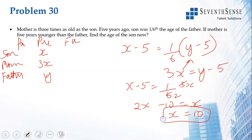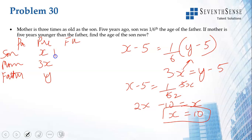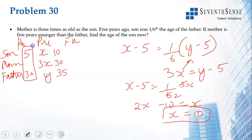Presently the son's age is 10, mother's age is 30, father is 35 (mother is 5 years younger than father). Five years ago the son was 5, father was 30; and 5 is indeed 1/6th of 30. Verified and correct.